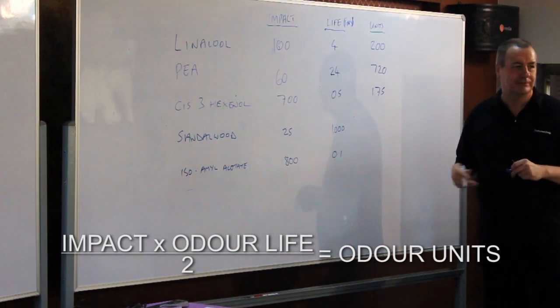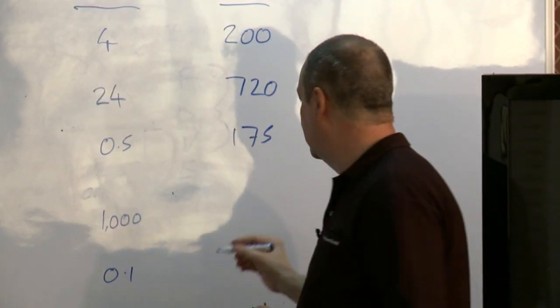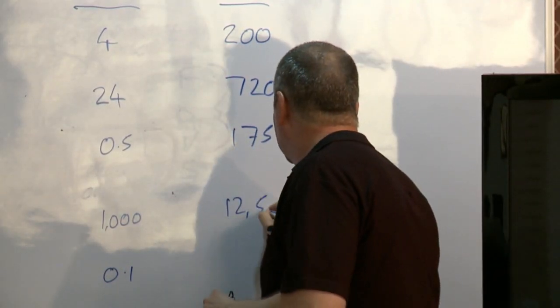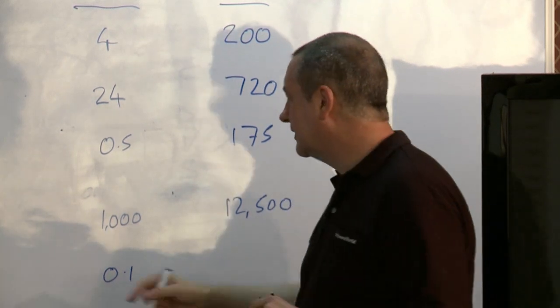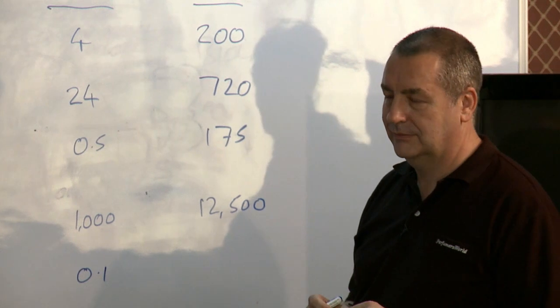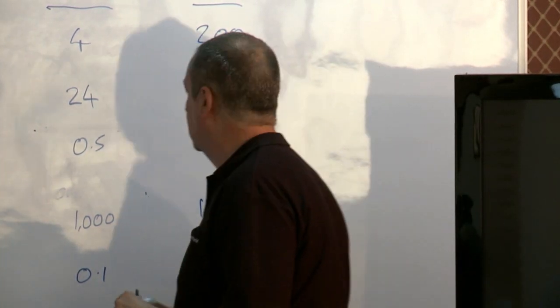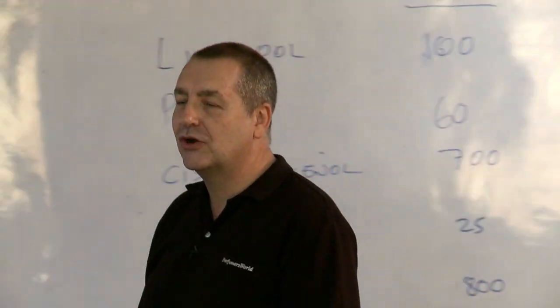Sandalwood? 5,000. 12,500. Yep. And isolamyl acetate? 40. That's right. There's an interesting correlation here.